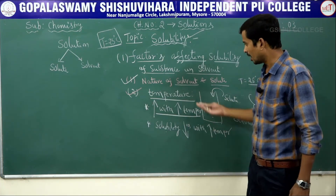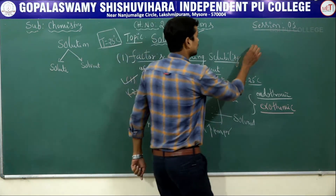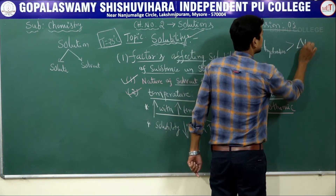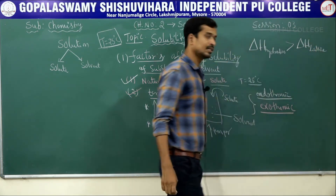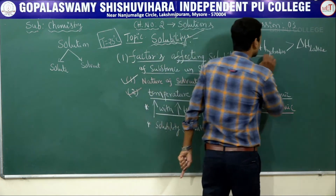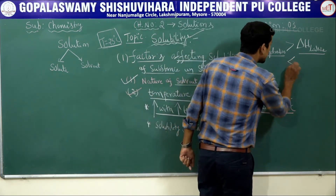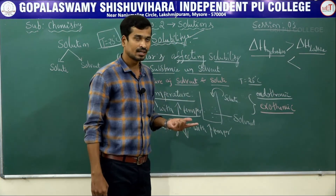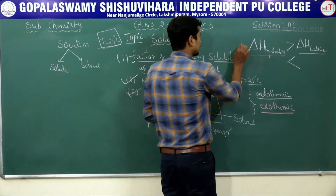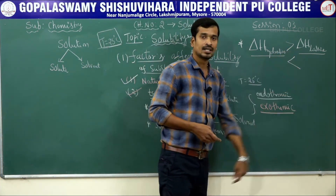Another extra point: for any solute dissolved in a given solvent, if the enthalpy of hydration (ΔH) is greater than the lattice energy, the solute is soluble. For example, NaCl is soluble in water because the enthalpy of hydration is greater than the lattice energy. If the solute is insoluble, the enthalpy of hydration is less than the lattice energy. You will study lattice energy in the Born-Haber cycle. Solubility occurs only when enthalpy of hydration is higher than lattice energy.